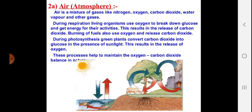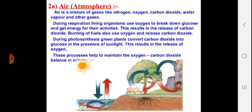Now let us start with the atmosphere. Atmosphere is an important key for all living organisms because it is comprised of important gases like oxygen and carbon dioxide. It does have other gases like nitrogen, argon, helium and hydrogen, but oxygen and carbon dioxide are most important because without oxygen no living organism can survive, and without carbon dioxide no photosynthesis is possible. Air is a mixture of gases like nitrogen, oxygen, carbon dioxide, water vapour and other gases.